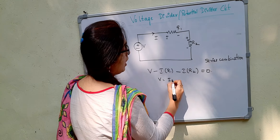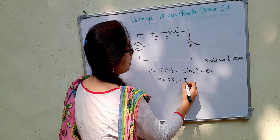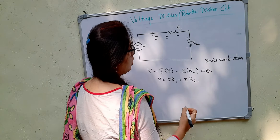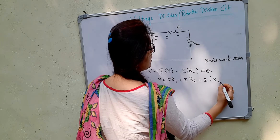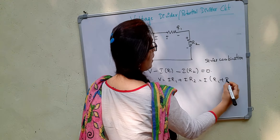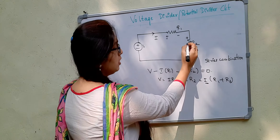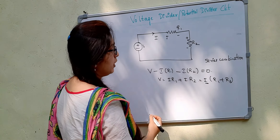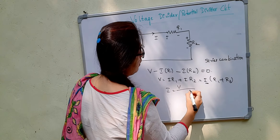So, V is equal to I R1 plus I R2. Taking I common: V equals I times R1 plus R2. This is because it is a series combination and there is only one path for the current to flow. So, I will be equal to V divided by R1 plus R2. This is the value of current.